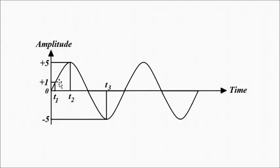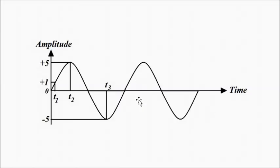The variation of amplitude with respect to time can be plotted by drawing horizontal and vertical lines at each point to get the amplitude at that time. For example, at time t1 the amplitude is 1, at t2 it is 5, at t3 it is minus 5, and so on. That is the basic essence of time domain representation.